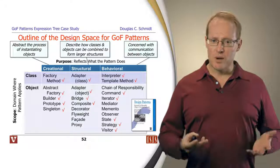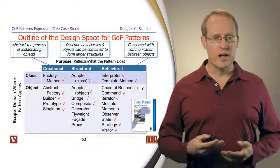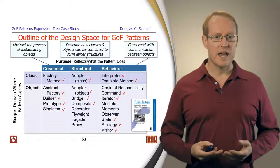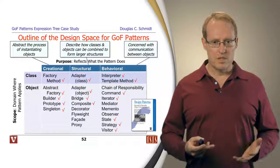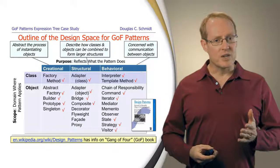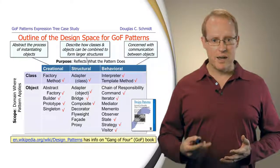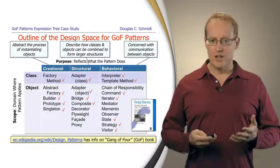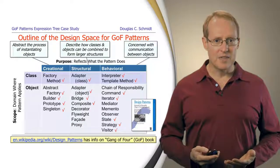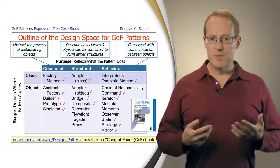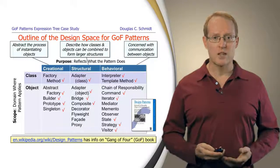As you'll see throughout the rest of this particular module, we're going to cover over half of the patterns in the Gang of Four book in the context of our expression tree processing application. You can take a look at this URL to find out more information about the Gang of Four book, and I strongly encourage you to get a copy of the book and read it. It has a wealth of knowledge about how to do effective design, especially some of the core patterns for object-oriented design and programming.